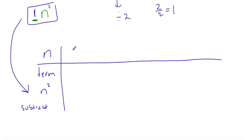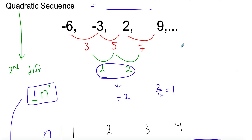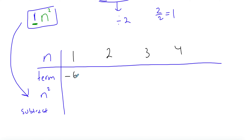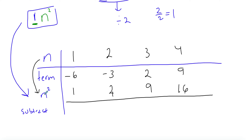n is just the position number — first, second, third, fourth term — and the terms are your actual numbers: negative 6, negative 3, 2, and 9. The n squared row is substituting: 1 squared is 1, 2 squared is 4, 3 squared is 9, 4 squared is 16. Be careful with substitution. Then the subtraction row is term minus n squared: negative 6 minus 1 is negative 7, negative 3 minus 4 is negative 7, 2 minus 9 is negative 7, and so on.